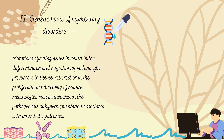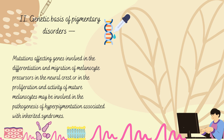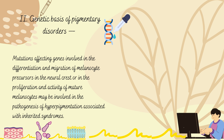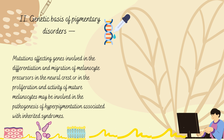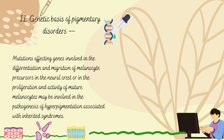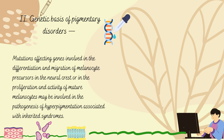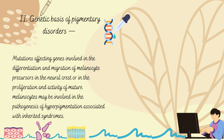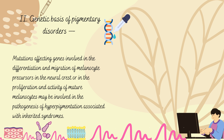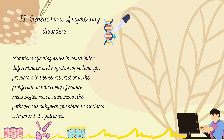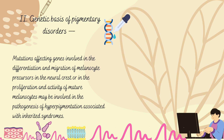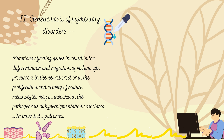Regarding the genetic basis of pigmentary disorders, the biochemical pathway of melanogenesis is under complex genetic control, with hundreds of genes and genetic polymorphisms involved in the modulation of type and distribution of pigmentation. Mutations affecting genes involved in differentiation and migration of melanocyte precursors in the neural crest, or in proliferation and activity of mature melanocytes, may be involved in the pathogenesis of hyperpigmentation associated with inherited syndromes.